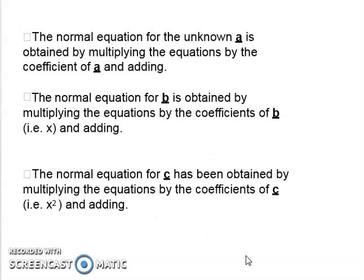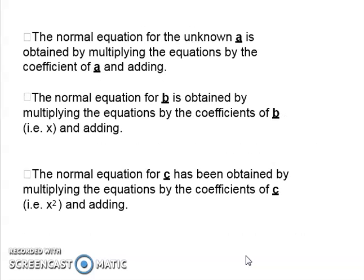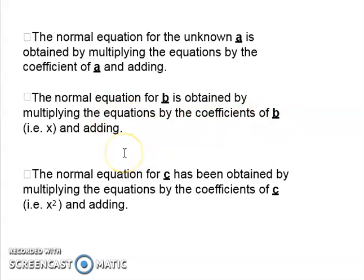In general for any curve, we can write y = a + bx + cx² + ... up to the m-th term, written in m normal equations. For each normal equation, the value of a is obtained by multiplying the coefficient of a and adding; for b, by multiplying by the coefficient of b (which is x); and for c, by multiplying by the coefficient of c (which is x²).